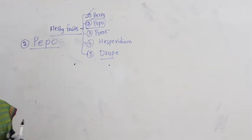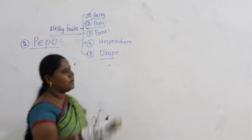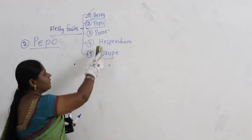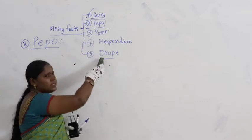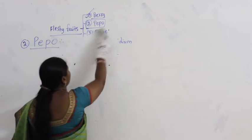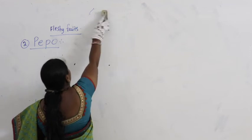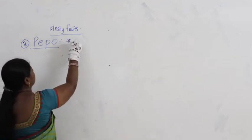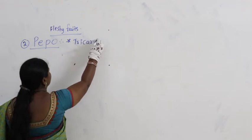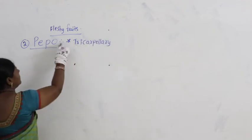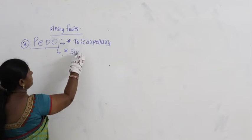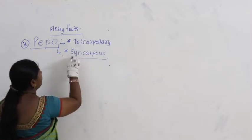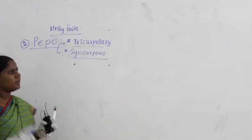Now let us see the characteristics of pepo. In pepo, it is tricarpellary syncarpus. Tricarpellary means the number of carpels are three. Syncarpus means carpels are fused.